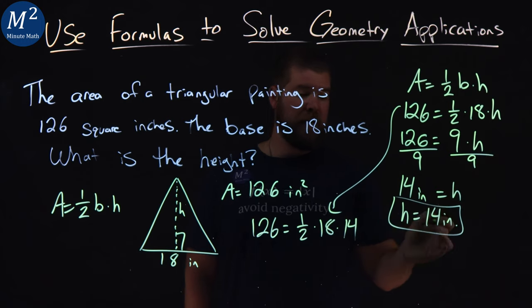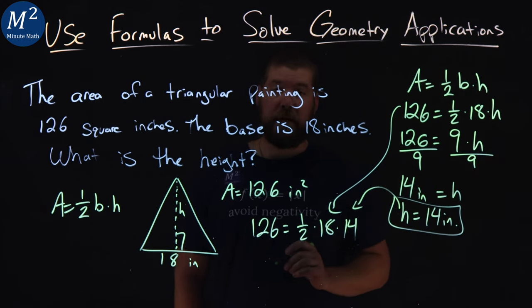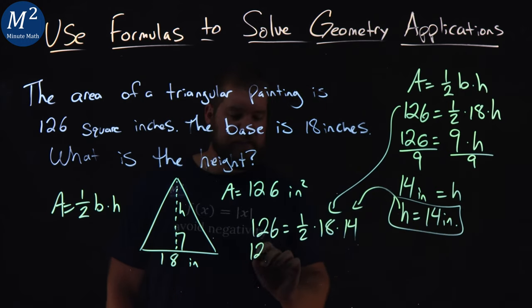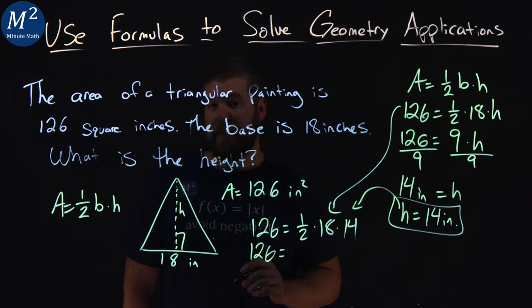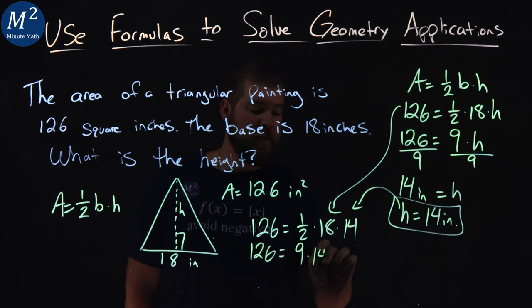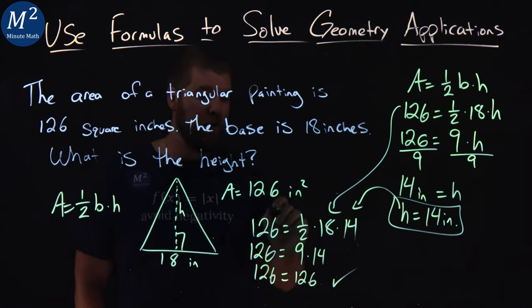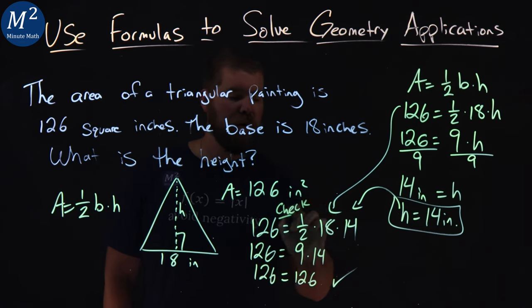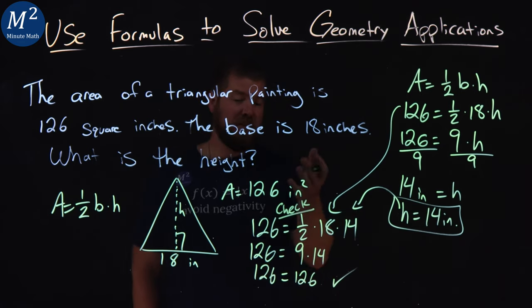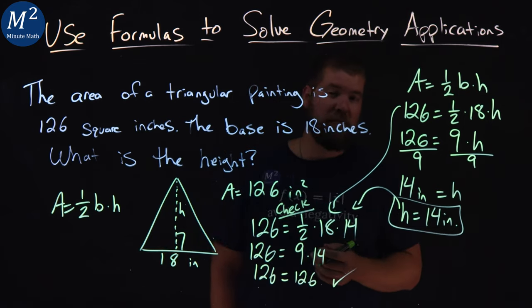I took what I had and plugged in h being 14. So 126 equals one-half times 18, which is 9, times 14. 9 times 14 is 126. Our left and right-hand sides are equal. Our check worked, and it's worth doing almost every time.